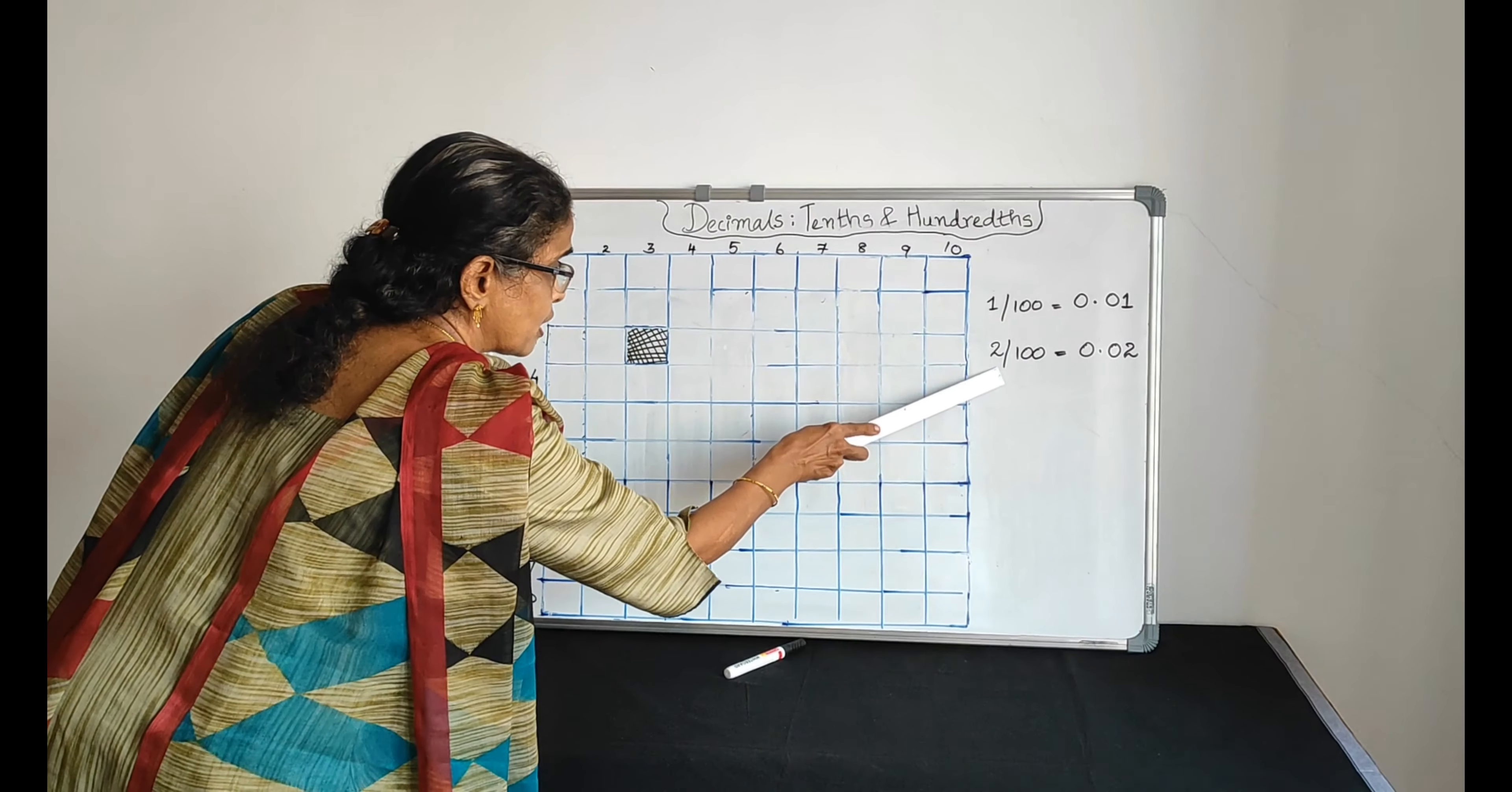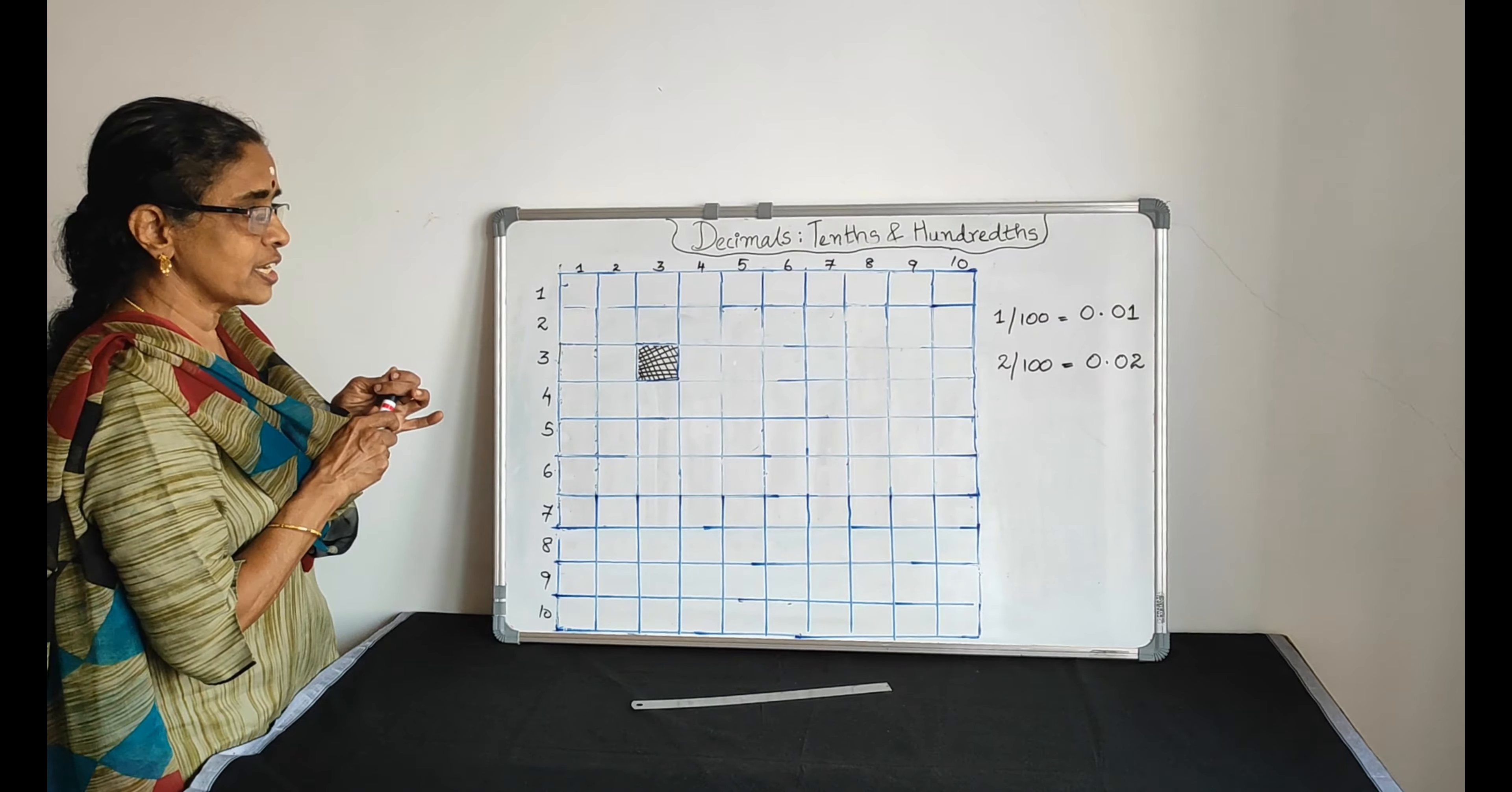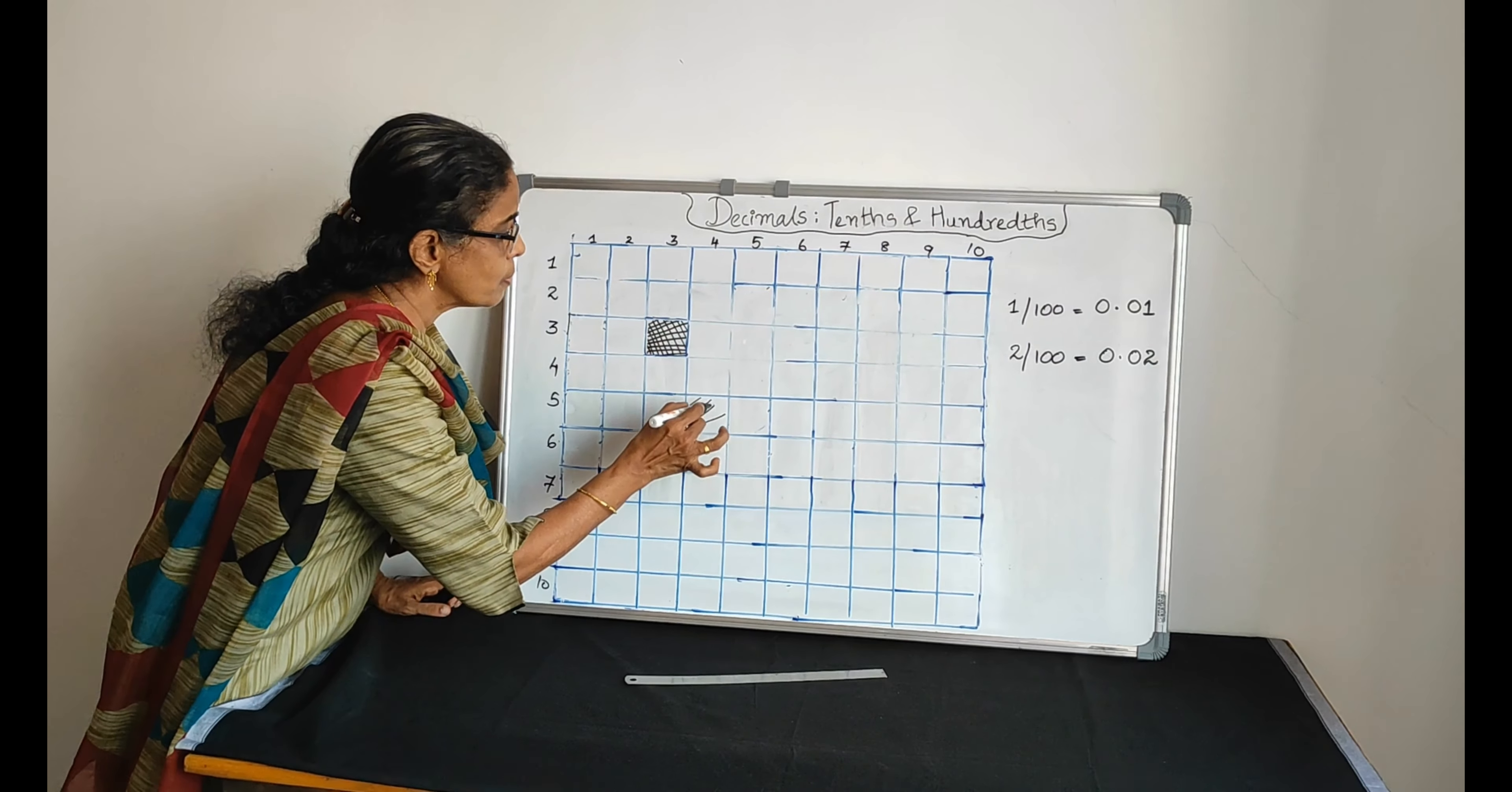Now tell me, if the fraction is 2/100, how many parts we have to shade more? Already one portion is shaded. We need 2/100, so we have to shade one more portion.